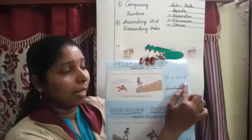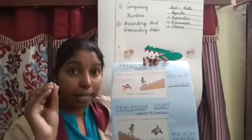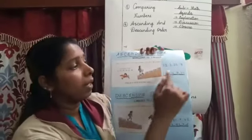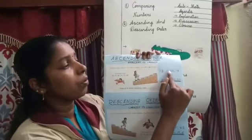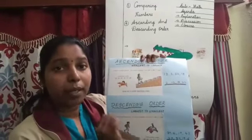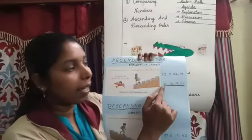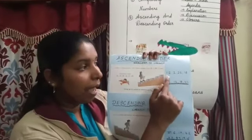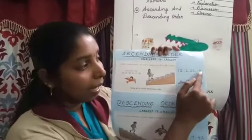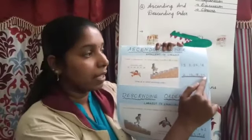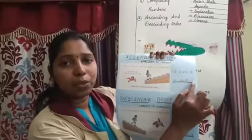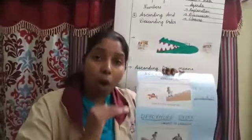Now, when the teacher gives you numbers, you need to arrange them from small to big. Here you see: 12, 2, 20, 18. Can you tell me which is the smallest number? 2. So I wrote here 2, then 12, then 18, then 22. So I wrote the numbers from small to big: 2, 12, 18, 22. So this is called ascending order — small to big.